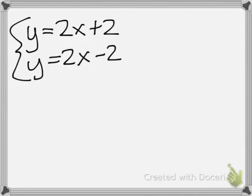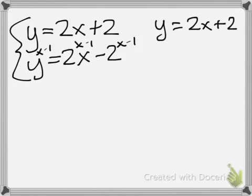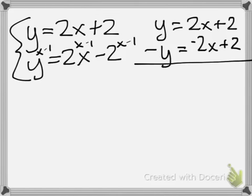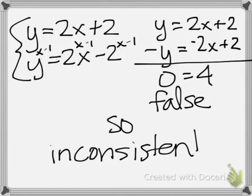Another example. 2x plus y equals 2x plus two. Y equals 2x minus two. We're going to multiply everything on the bottom by negative one. So we get y equals 2x plus two on the top. Negative y equals negative 2x plus two on the bottom. We end up with zero equals four. Not true. So it's inconsistent.